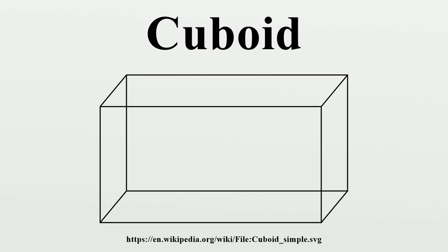Rectangular cuboid. In a rectangular cuboid, all angles are right angles, and opposite faces of a cuboid are equal. By definition this makes it a right rectangular prism, and the terms rectangular parallelopiped or orthogonal parallelopiped are also used to designate this polyhedron.